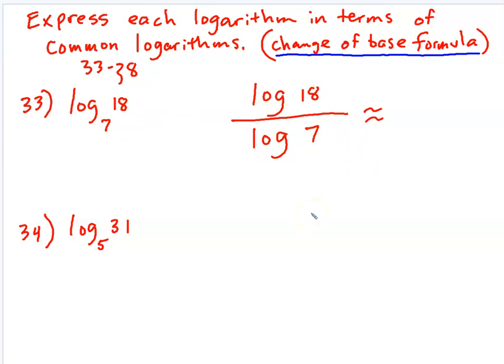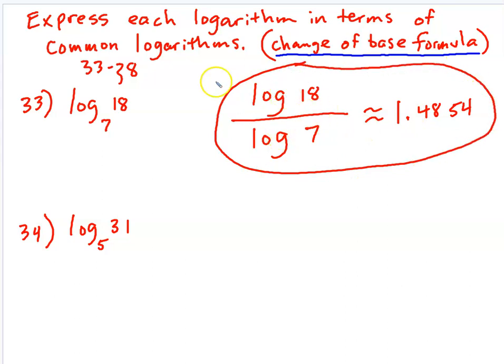So you literally just do log of the top number divided by log of the base, just like I've done here. And so let's go to our calculator, hit the log button, type in 18, close the parentheses, divided by log again, and type in seven, close the parentheses, and we're going to round it just like the others, four decimal places, so 1.4854 rounded. So this really is the final answer.